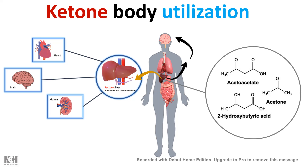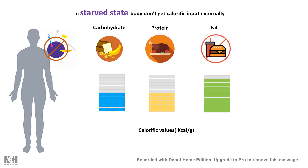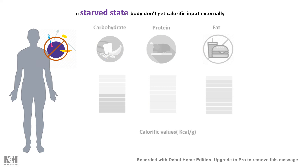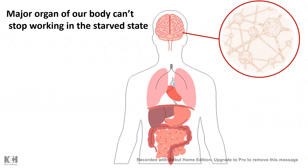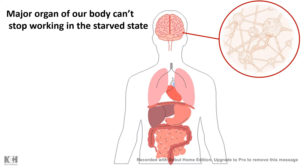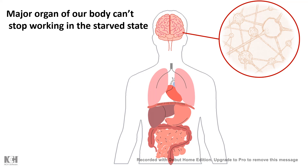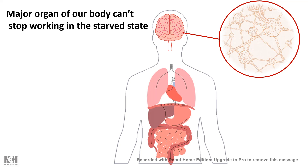Let's imagine we are undergoing starvation. In a starved state, our body does not get any caloric input externally. That means we need energy at that point. And in that particular starved situation, even if our body is not getting energy from outside, our internal vital organs cannot stop working. For example, our brain cannot stop firing, our heart cannot stop pumping. So some alternative format of fuel is required to keep our internal organs active.